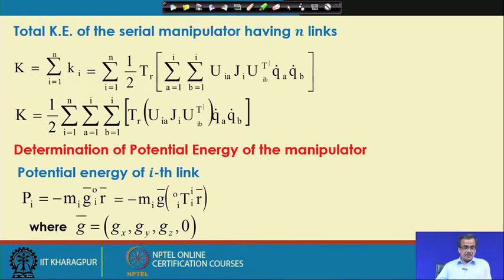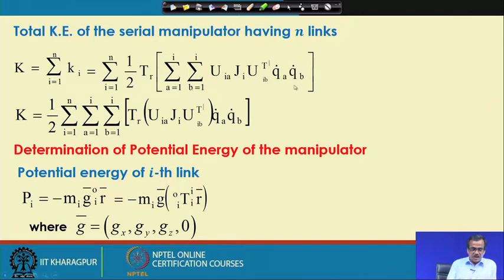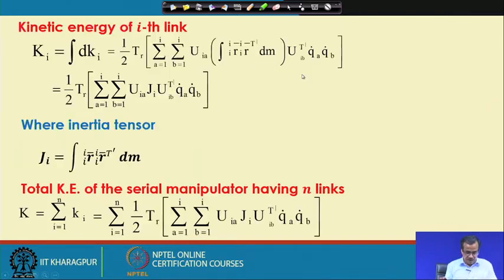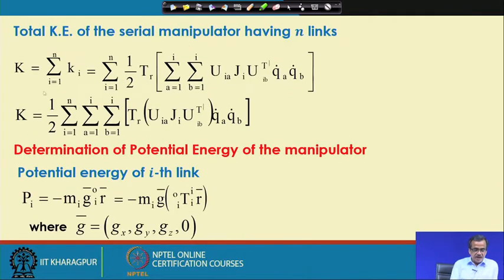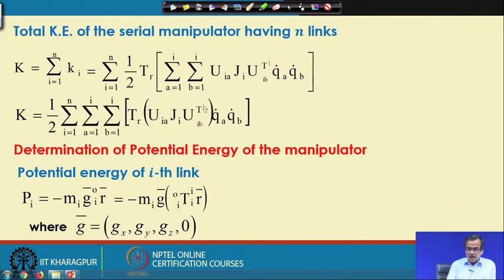The kinetic energy for the manipulator having n links can be rearranged and rewritten in a slightly different way. We can write K as half, summation i from 1 to n, summation a from 1 to i, summation b from 1 to i, trace of U_ia, Ji, U_ib transpose, Q_a dot, Q_b dot. This is how we find the expression for the total kinetic energy for the whole robot.